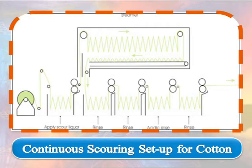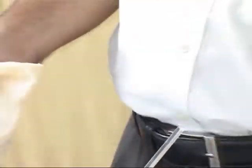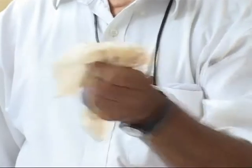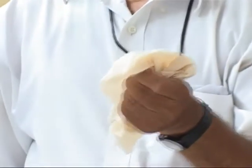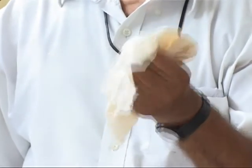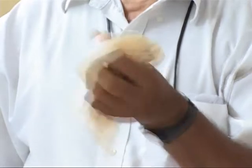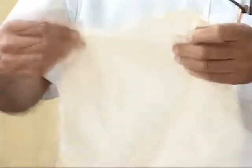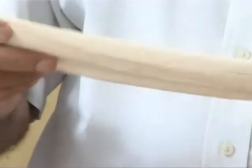In the practical process, we take desized cloth, which is comparatively softer than grey cloth and has stronger water absorption capacity. To remove the natural impurities present in the cotton fiber, we carry out scouring.